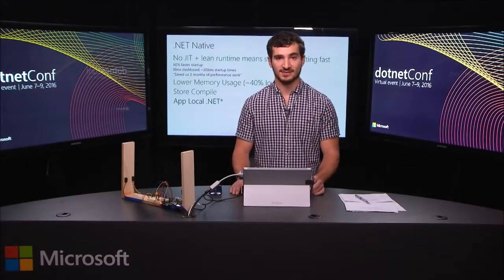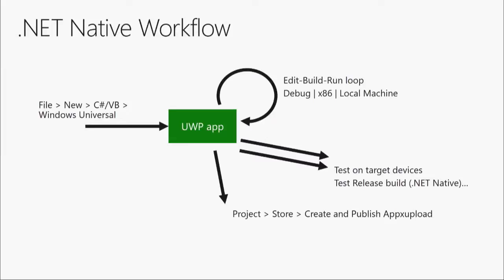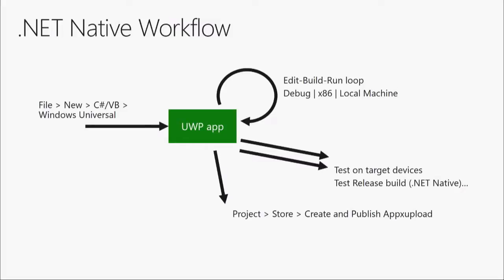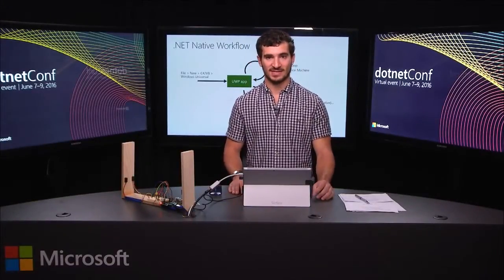With .NET Native, your workflow needs to adjust slightly. When you build a debug package in Visual Studio, by default you're building MSIL binaries running against the CoreCLR. When you switch to a release build, you're compiling with .NET Native. You should test more regularly in release mode — not just when you're ready to publish. .NET Native is a new and rapidly evolving technology. I recommend testing in release mode about every four hours of development, otherwise you risk discovering issues only after months of coding.